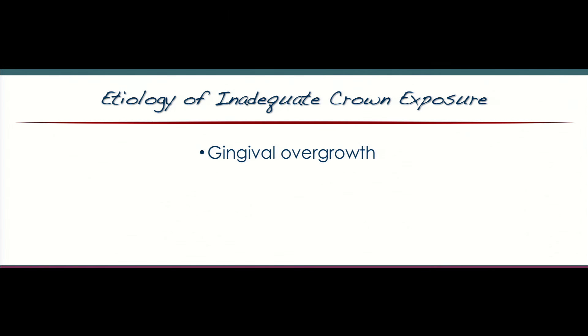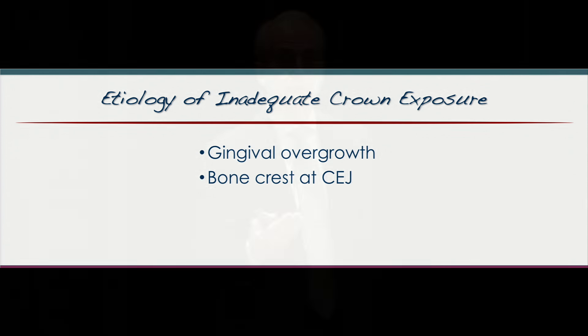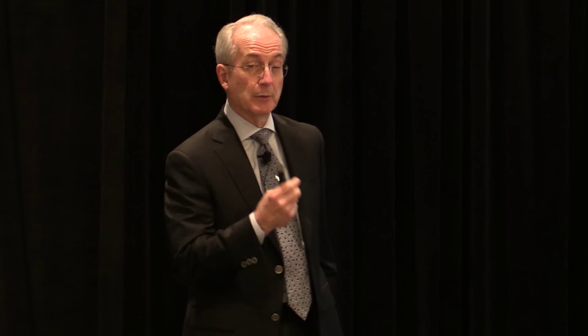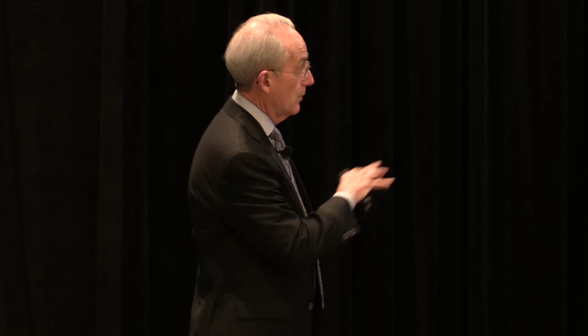What I want to focus on today is the inadequate crown exposure and aesthetic crown lengthening. The etiology — what causes short clinical crowns — might be a soft tissue problem, just an excessive amount of gingiva covering the tooth, which is easily treated by a gingivectomy. There may be a bony problem, sometimes called altered active eruption, where the bone is at or near the CEJ, leading the soft tissue to position itself more coronally. There may also be thick alveolar bone — what I call a speed bump — causing tissue to come over that bump and position itself more coronally. Or there may be a combination: a little gingival overgrowth, a bony problem, bone near the CEJ, or thick interdental bone.